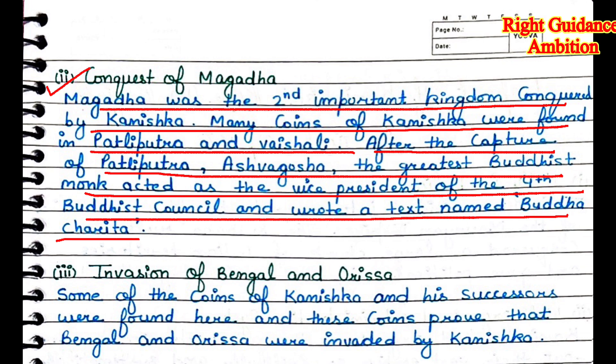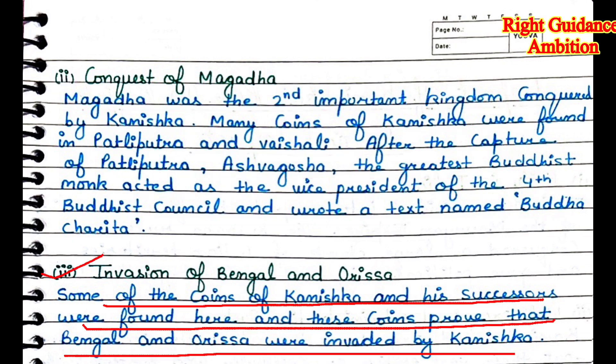Ashvaghosha also wrote a famous book called Buddhacharita. The third point is the invasion of Bengal and Orissa — some of the coins of Kanishka and his successors were found there, and these coins proved that Bengal and Orissa were invaded by Kanishka.